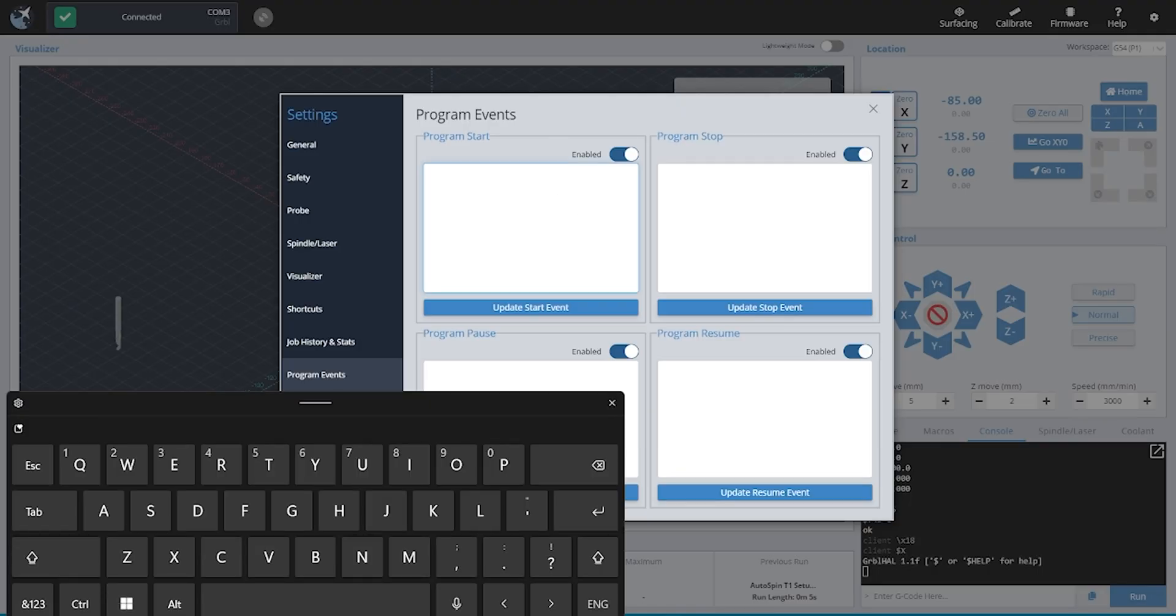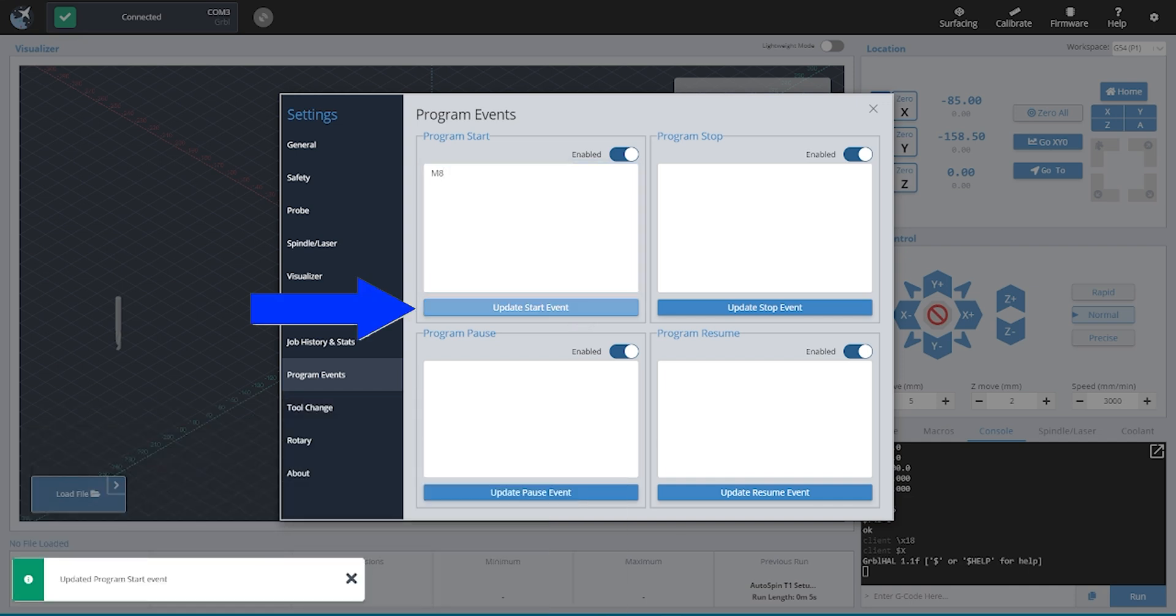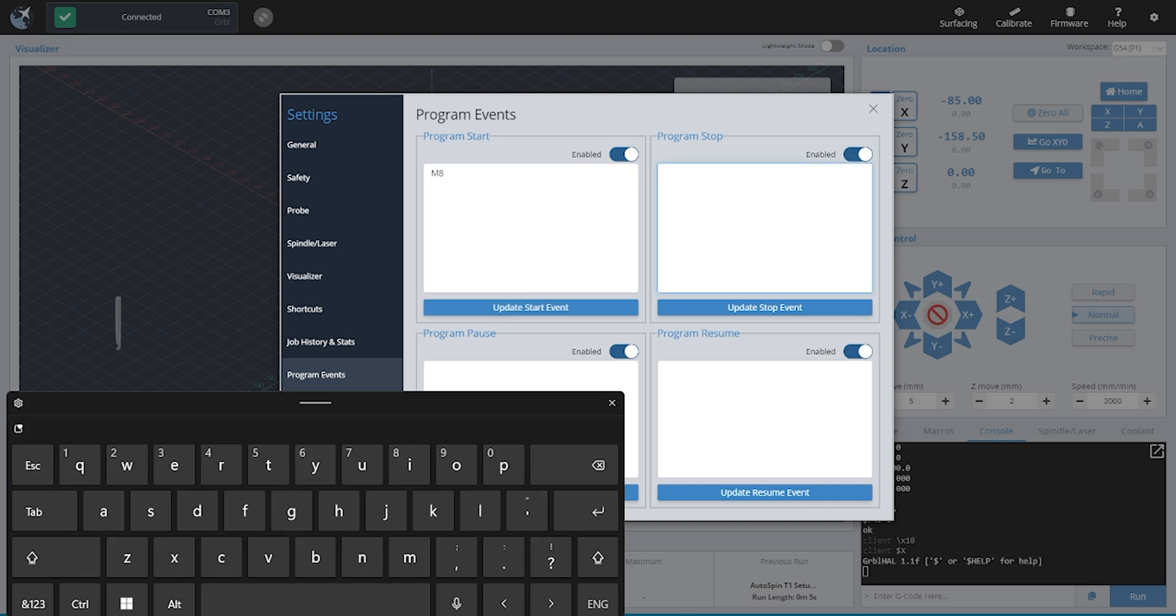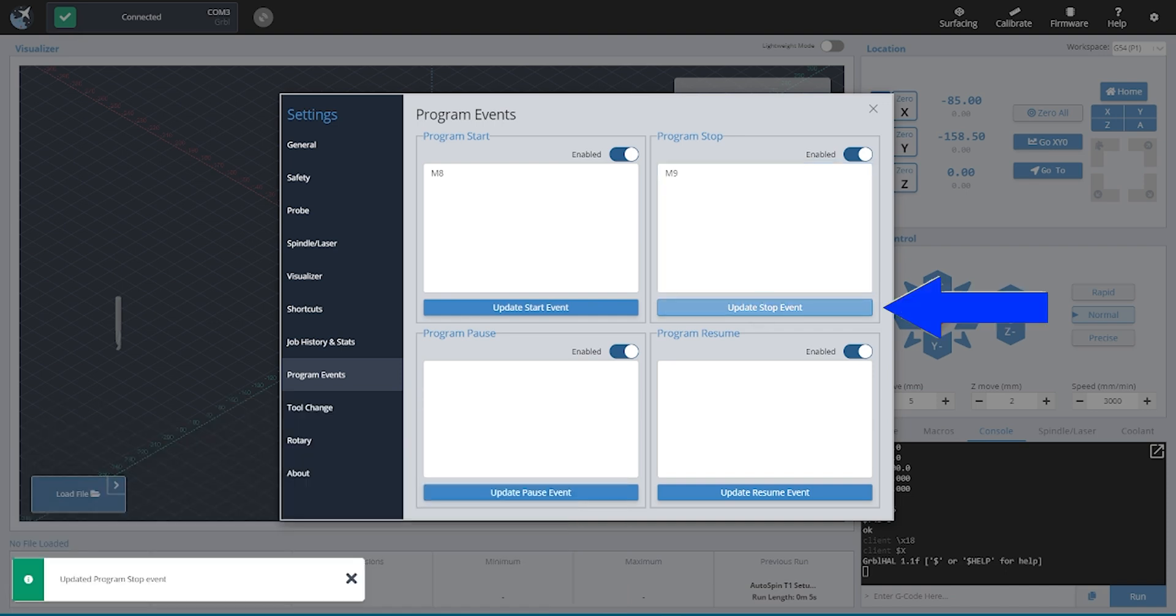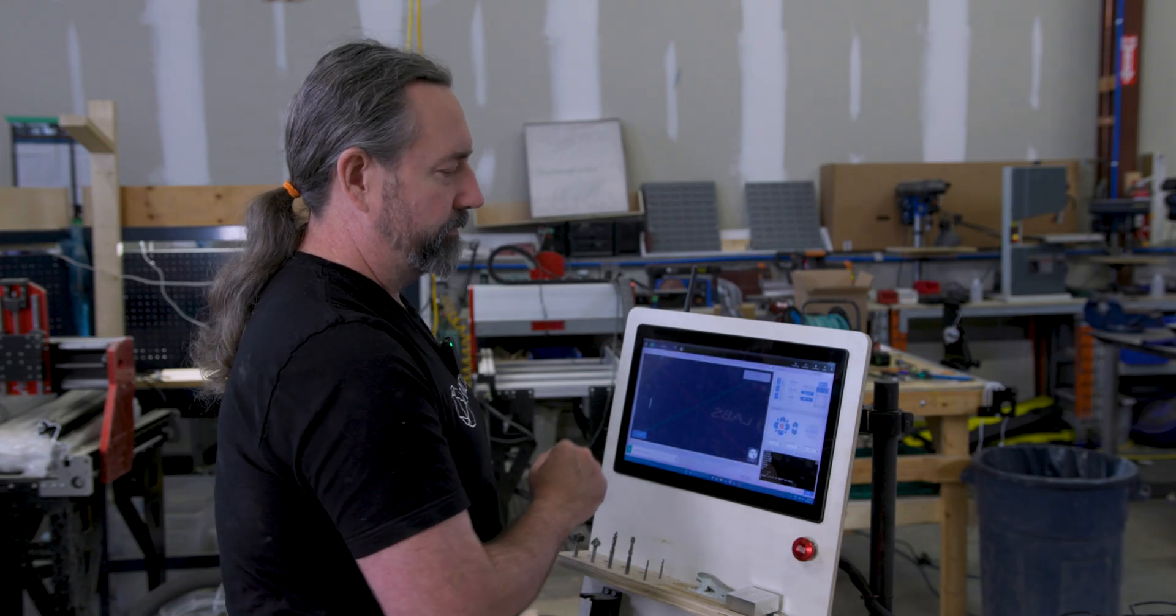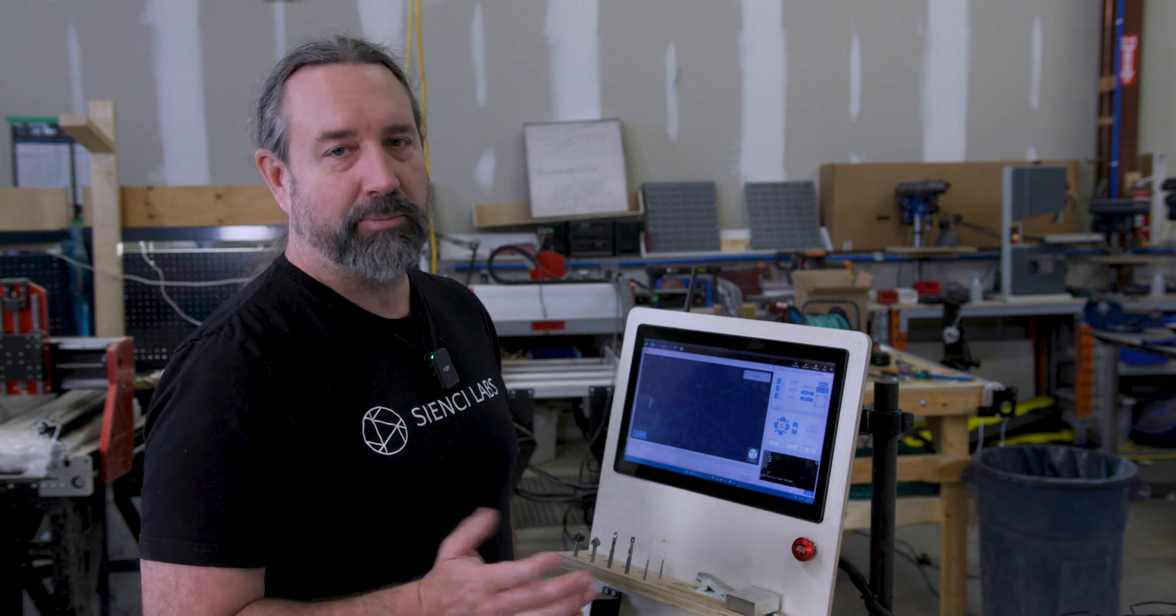So what we want to do is under program start, we're going to put an M8 command. And always don't forget to hit update start event, otherwise it won't take. And in the program stop, we're going to input an M9 command. Don't forget to hit update stop event and everything is now ready to rock and roll. That's it. That's as simple as it gets.